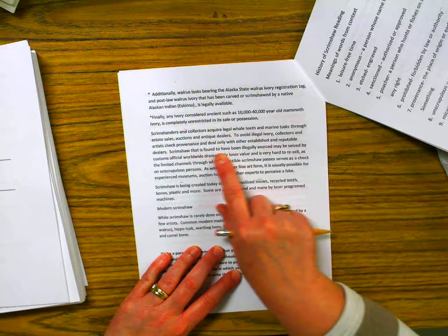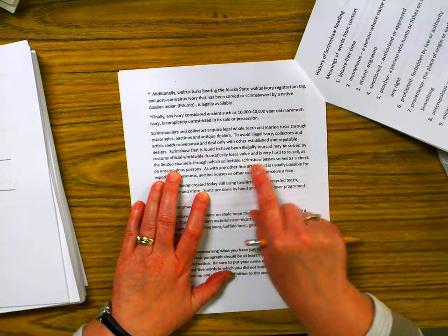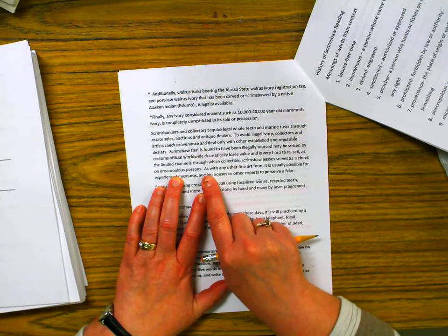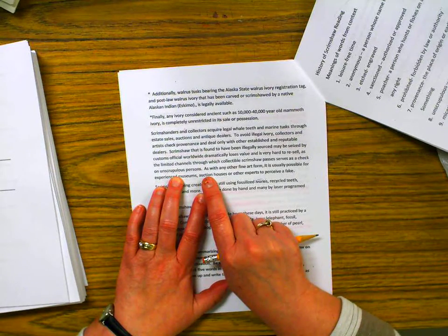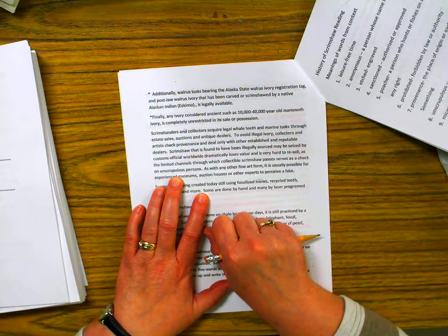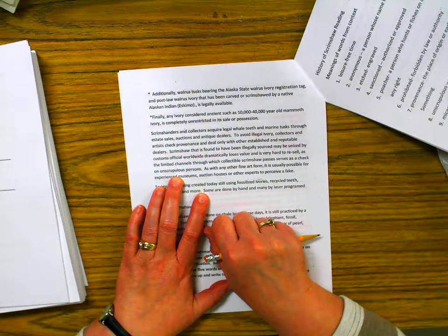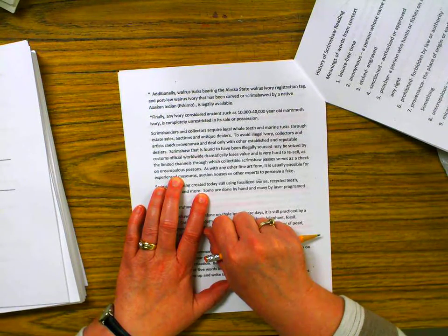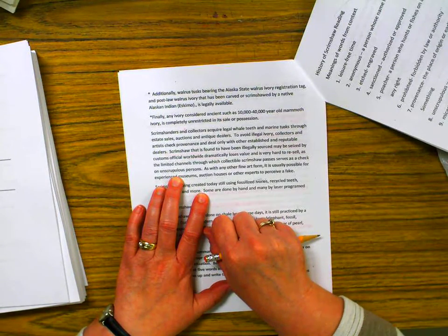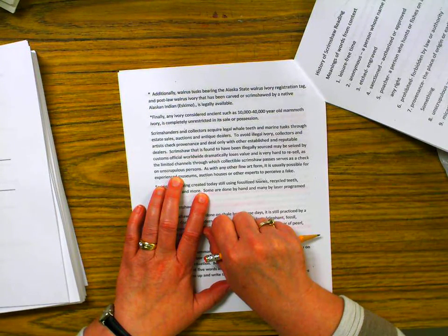Scrimshaw that is found to have been illegally sourced may be seized by the limited channels through which collectible scrimshaw passes and serves as a check on an unscrupulous person. Again, it's like fine art. If you steal a famous painting, who are you going to sell it to without getting in trouble? Think about it. Usually when a famous work of art is stolen, it doesn't resurface until 50 to 75 years after it was stolen. Because that's how long they wait before they're not afraid to get caught.